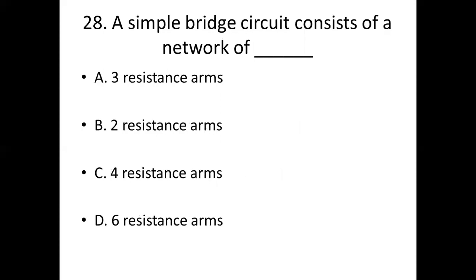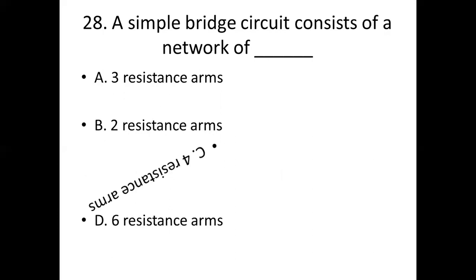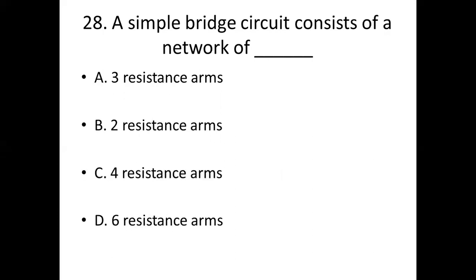28th bit. A simple bridge circuit consists of a network of dash. Option A: three resistance arms. Option B: two resistance arms. Option C: four resistance arms. Option D: six resistance arms. Answer: Option C, four resistance arms.